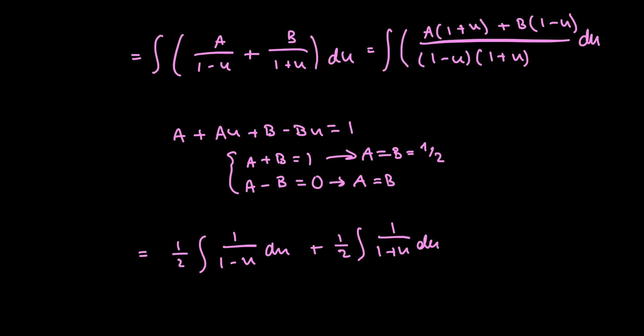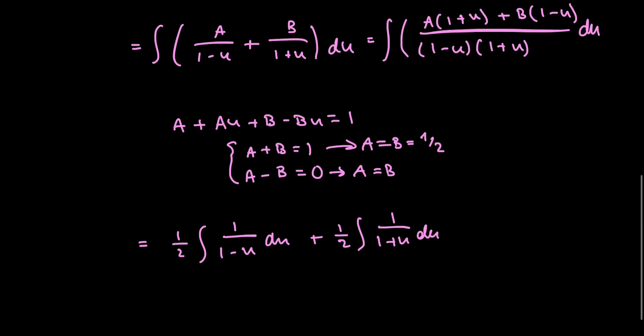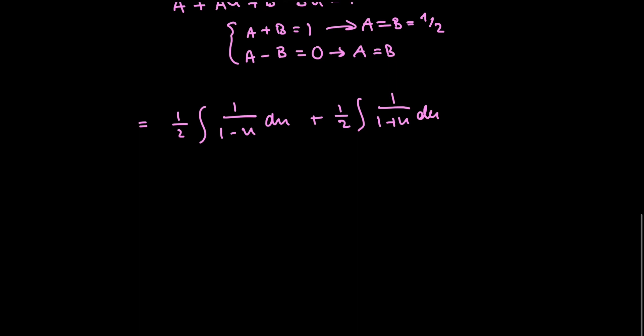Now these two integrals are relatively easy to integrate. Technically, you're doing another substitution. I'm not going to show the steps because it's pretty straightforward. So you get, for the first one, it's negative 1 half log 1 minus u, and then the second one is 1 half log 1 plus u, plus the arbitrary constant c.